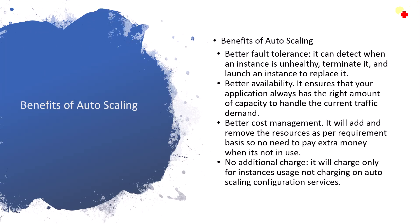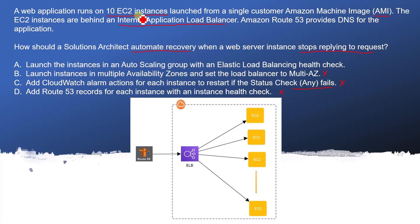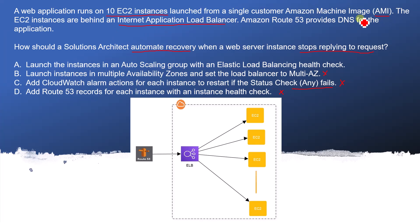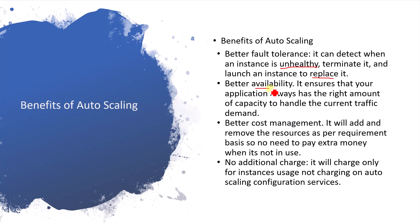The benefits of auto scaling include better fault tolerance — it can detect when an instance is unhealthy, terminate it, and launch a new instance to replace it. So we always have 10 EC2 instances because if one is terminated it is replaced by another using the same Amazon Machine Image. Better availability ensures your application always has the right capacity to handle current traffic, maintaining the desired capacity of 10 and spinning up a new instance if any health check fails.